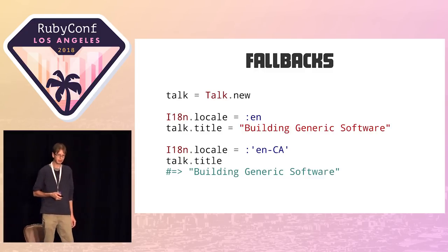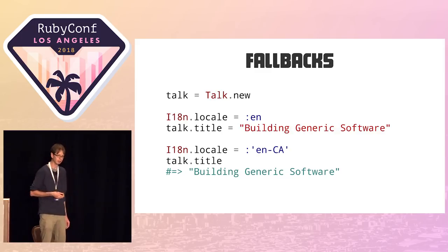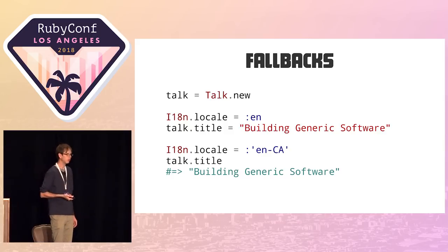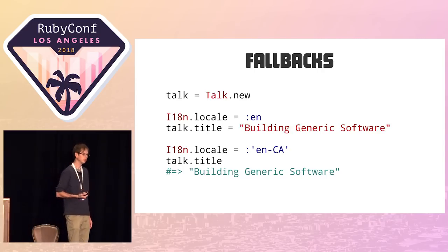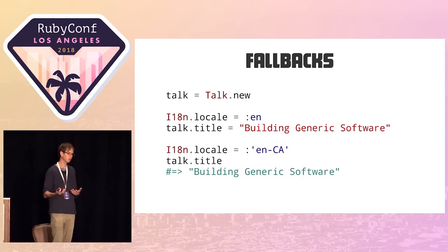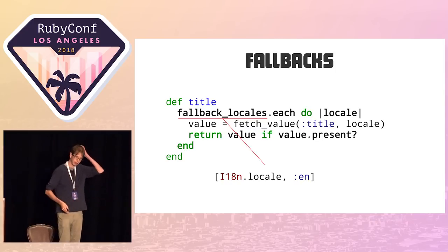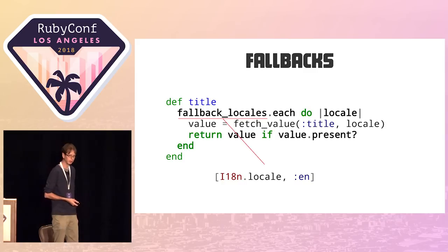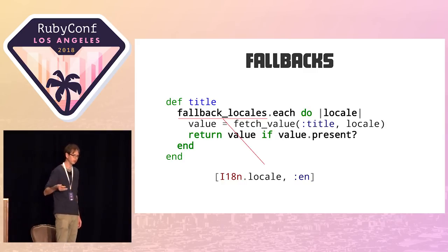The most common access pattern is called fallbacks. If you've worked with i18n, you may know this — it's also a feature for static translations. You fall back from one language to another. If I create a talk, set the language to English, set the title to 'building generic software,' then set the locale to `en-CA` (Canadian regional English) — without fallbacks, this would be nil. But with fallbacks enabled, the convention is to fall back from the regional language to the base language, so you'd get the English translation. The implementation is simple: you loop through fallback locales, fetch the value, and if it's present you return it; if not, you go to the next one.